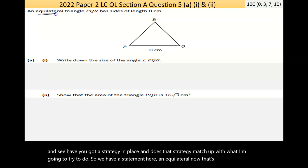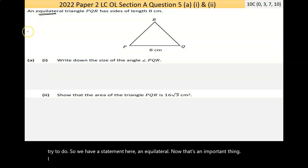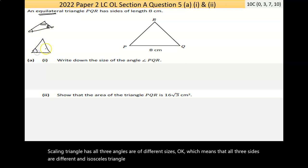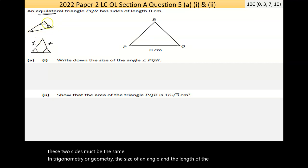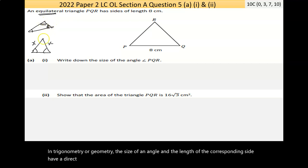Now a scalene triangle has all three angles of different sizes, which means that all three sides are different lengths. An isosceles triangle means that these two angles are equal, therefore these two sides must be the same. In trigonometry or geometry, the size of an angle and the length of the corresponding side have a direct relationship. That's a really important thing to keep in mind.